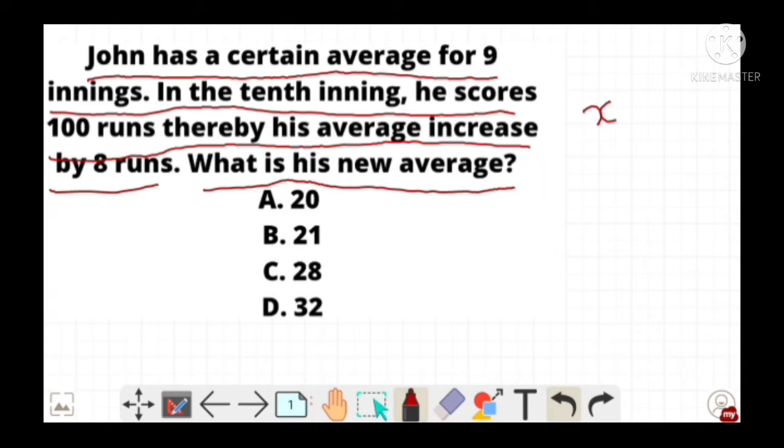The question says John scores 100 runs in his tenth inning. It means the total runs after his tenth inning becomes 100 + 9X. Now his average after ten innings becomes (100 + 9X) / 10.